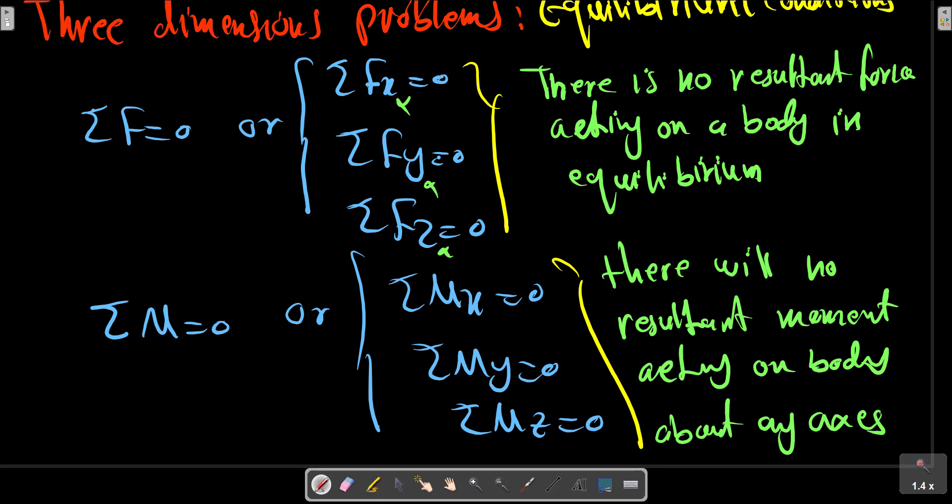Thus for the flywheel, the momentum about x may not be zero and the summation of the force in the x-axis is not zero, but the remaining four equilibrium equations for the flywheel would be satisfied. In applying the vector form of these equations, we first express each force in the form of vectors.